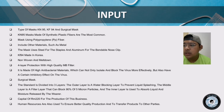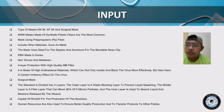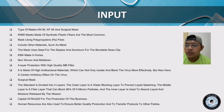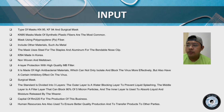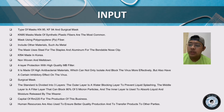The surgical mask standard is divided into 3 layers. The outer layer is a water-blocking layer to prevent splashing. The middle layer is a filter layer that can block 90% of 5-micron particles. The inner layer is used to absorb moisture. The capital value is RM220 for the production of this business. Human resources are also used to ensure better quality production and to transfer products to other parties.